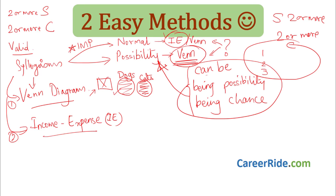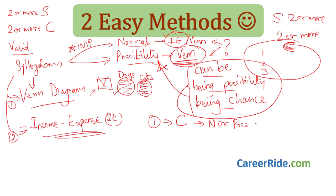If you do not see the words 'can be', 'possibility', or 'chance' in the conclusion, it is a normal sum. I have just given it the name 'normal' for your benefit to understand. Possibility sums are a little bit more complex than normal sums, but still easy. So the first step while solving syllogism sums: look at the conclusion and see whether it is a normal or a possibility sum. Then decide the method — income expenditure for normal, Venn diagram for possibility.